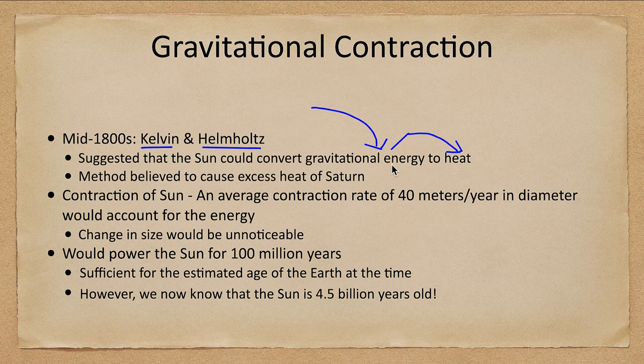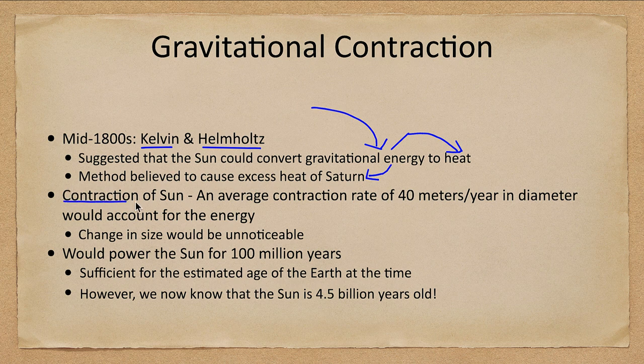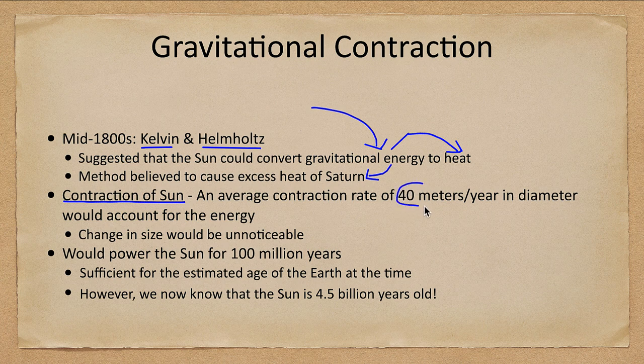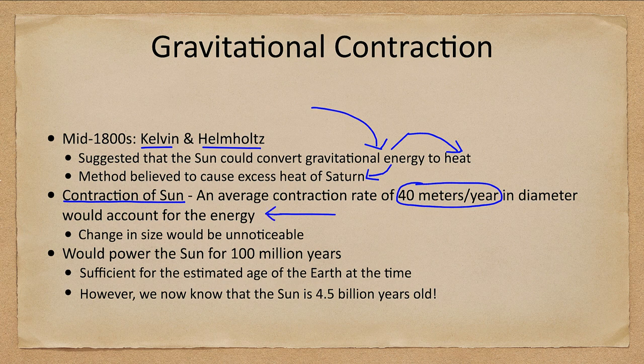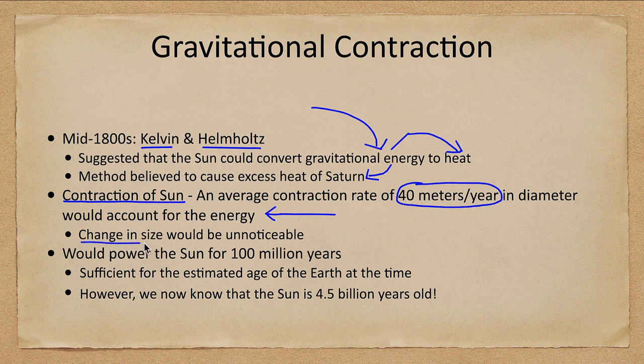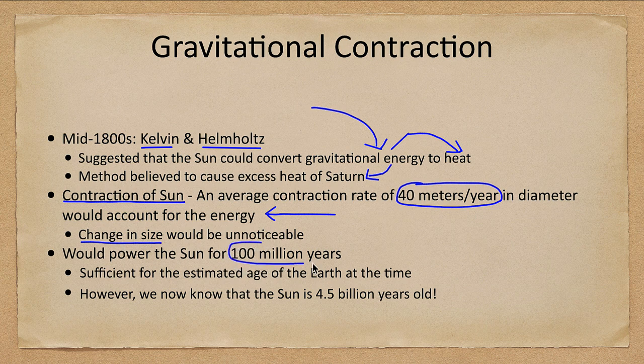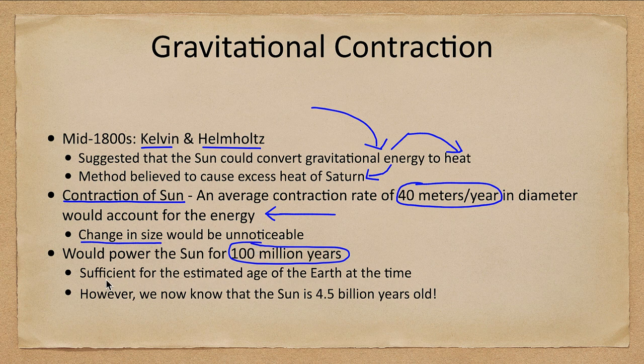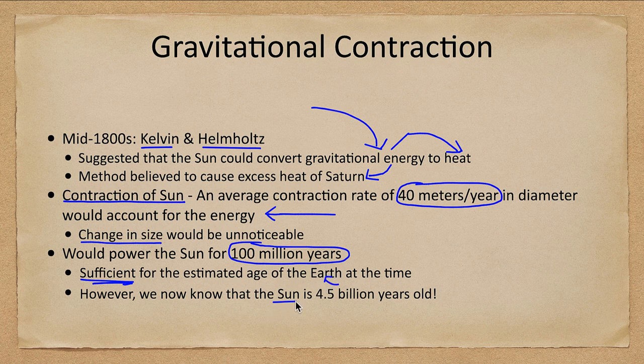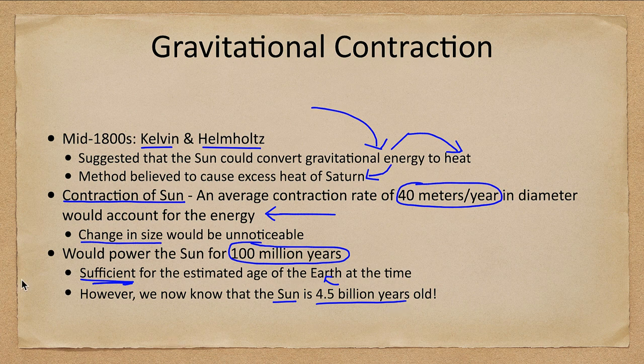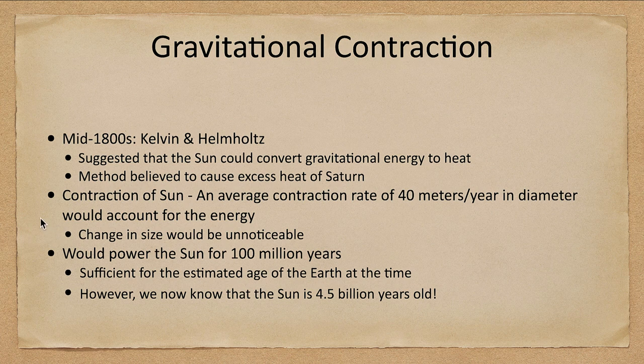This is what we believe causes Saturn to have excess heat. The Sun would have to contract about 40 meters per year in diameter to account for the energy produced. While this change in size seems significant it would be unnoticeable relative to the size of the Sun, and it could power the Sun for a hundred million years. At the time this was sufficient. However we now know that the Sun and Earth are four and a half billion years old, much older than this, and gravitational contraction is not able to supply energy for that long.